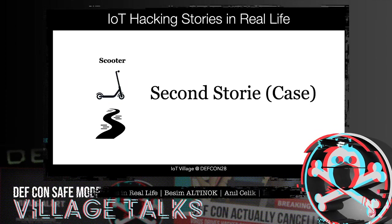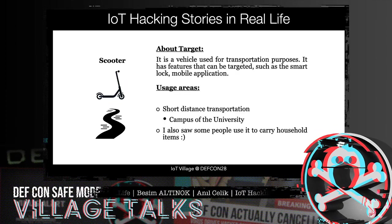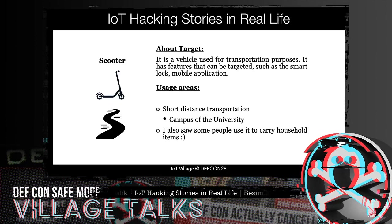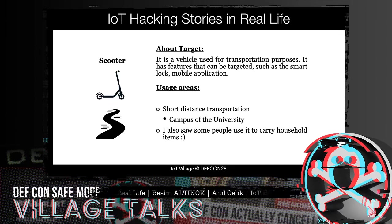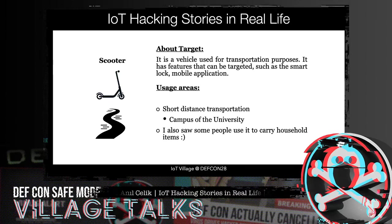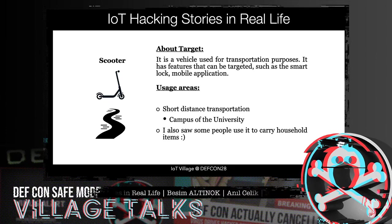The second story is about a smart scooter monitor. This product is a vehicle used for transportation purposes. It has features that can be targeted, such as a smart lock, mobile application, developer interface, and others. This smart scooter is generally used for short-distance transportation, like on university campuses. I also saw some people use it to carry household items in Turkey.